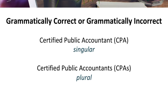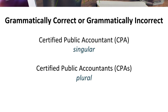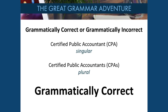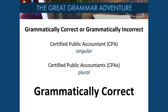Certified public accountant: CPA, all in uppercase letters. And plural: certified public accountants — CPAs — all uppercase with a lowercase s. Is this grammatically correct or grammatically incorrect? This is grammatically correct.